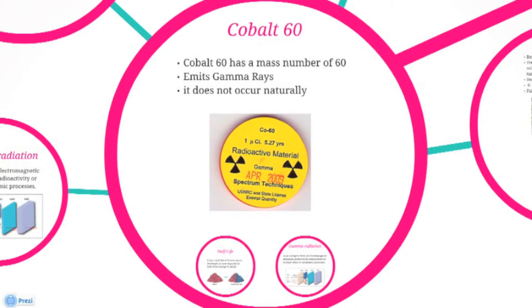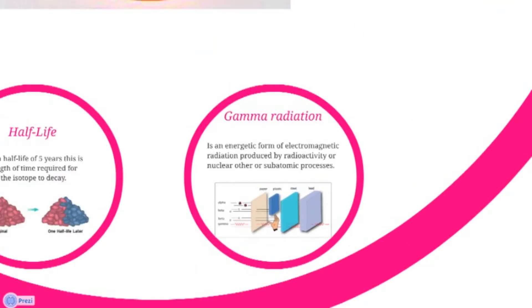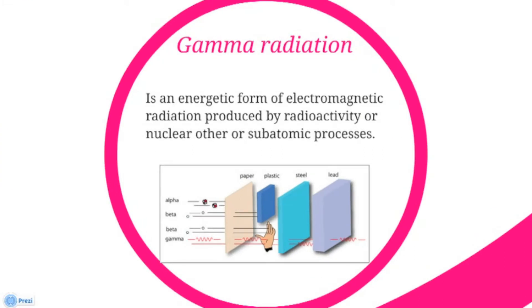Cobalt-60 emits gamma radiation, which is an energetic form of electromagnetic radiation. It is produced by radioactivity.